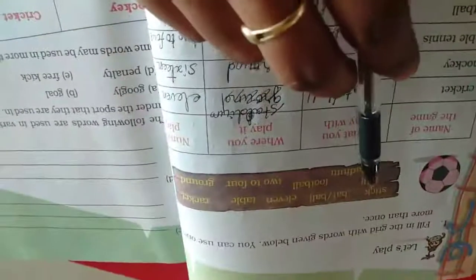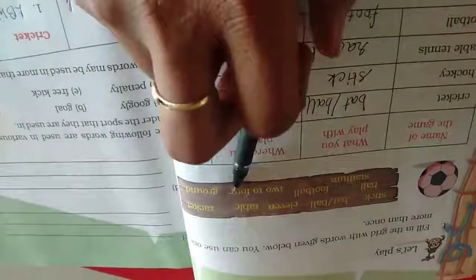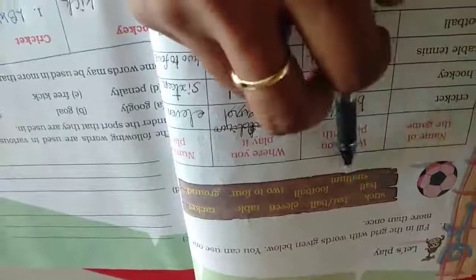Let's play column. In the box, they have given all those four games related words: stick, bat, ball, net, table, racket, ball, stadium, football, two to four, ground. Okay.